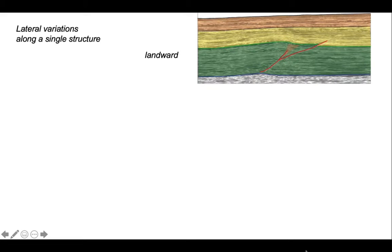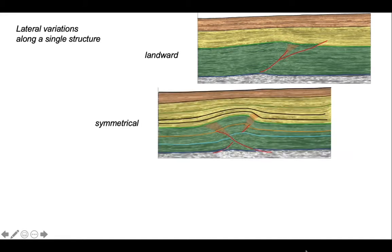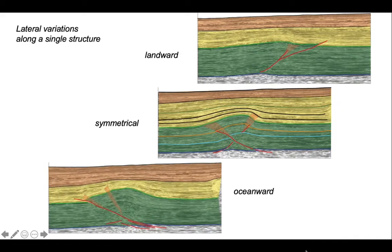We can capture these variations in sample profiles. The structure started directed landward, then passed through a zone where both landward and oceanward directed fault systems were present simultaneously, and finally organised itself to become entirely oceanward. This neatly demonstrates how the polarity of a thrust doesn't tell us very much about the overall kinematics. Everything is trying to move downslope, but sometimes the fold is accommodated by back-thrusting — which here is landward — and sometimes by fore-thrusting, which is oceanward towards the left.